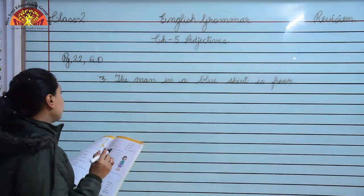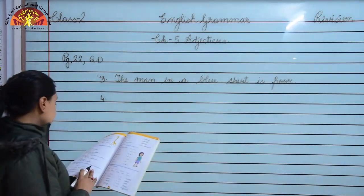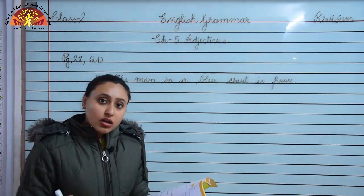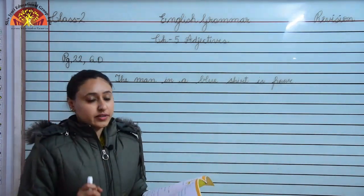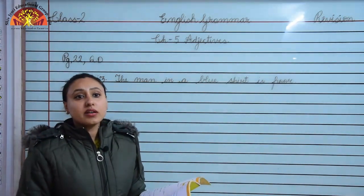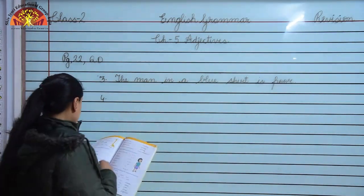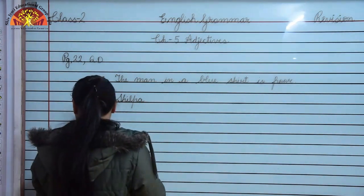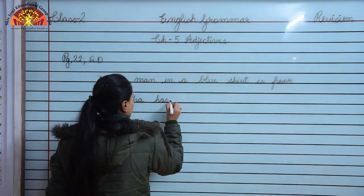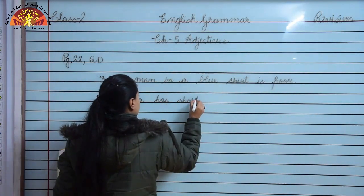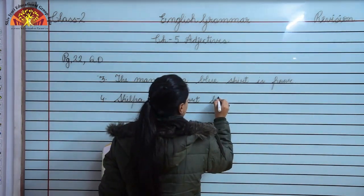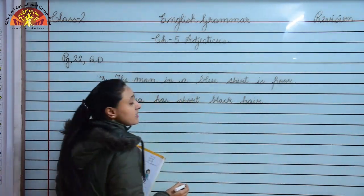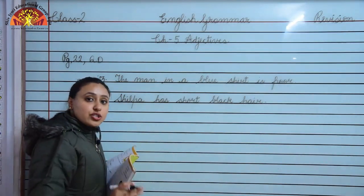Number 4: Shilpa has long black hair. The underlined word is long. The opposite of long is short. We will rewrite it using the word short: Shilpa has short black hair. Opposite of long is short.